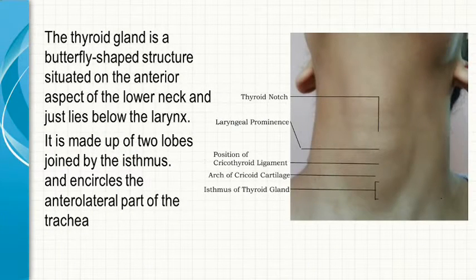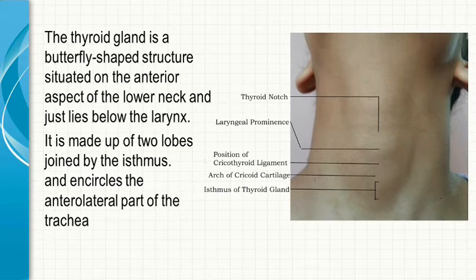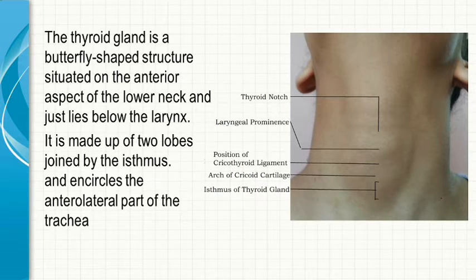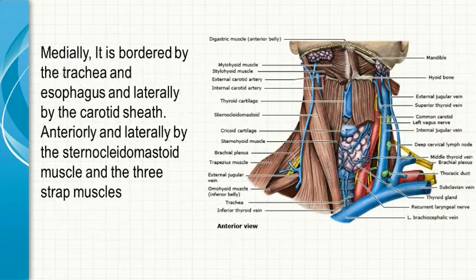The thyroid gland is a butterfly-shaped structure situated on the anterior aspect of the lower neck, just below the larynx. It is made up of two lobes joined by the isthmus, and encircles the anterior lateral part of the trachea.